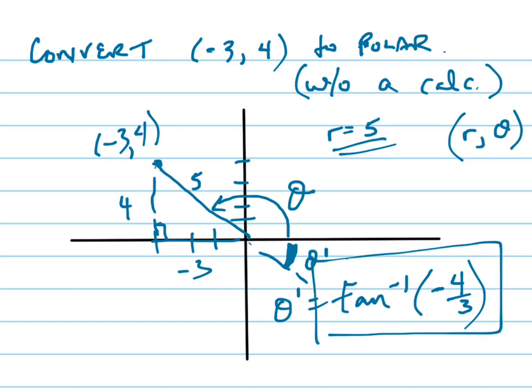it only gives you an answer between, remember the range of tangent inverse function is between -π/2 and positive π/2. It only gives you an answer in the fourth quadrant and the first quadrant, the fourth quadrant starting at -π/2, and the first quadrant at π/2. That's where it gives you an answer.